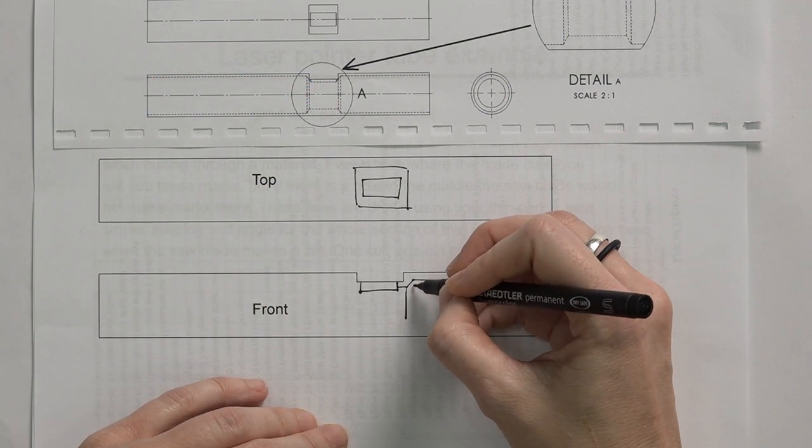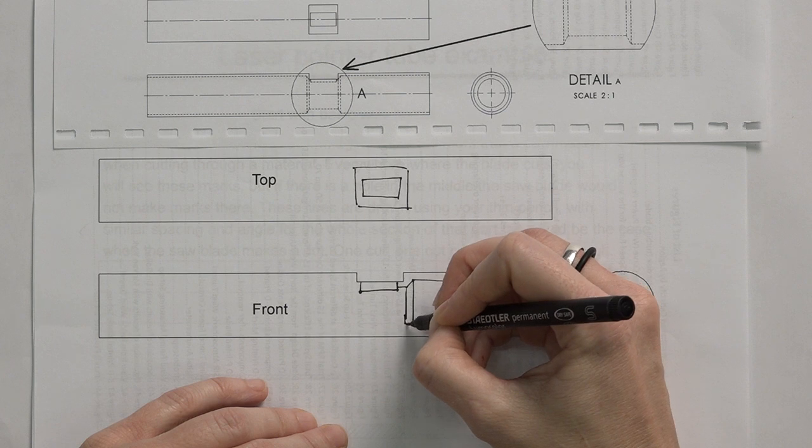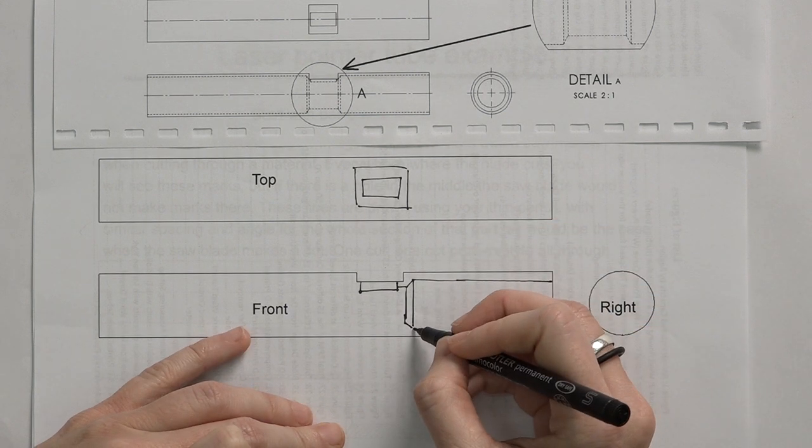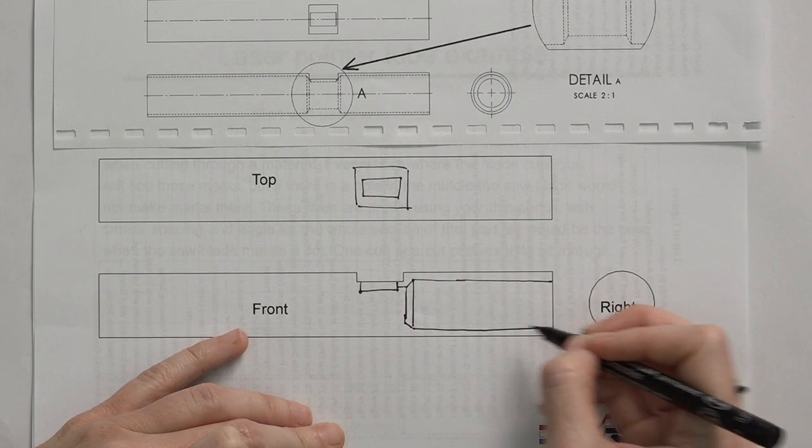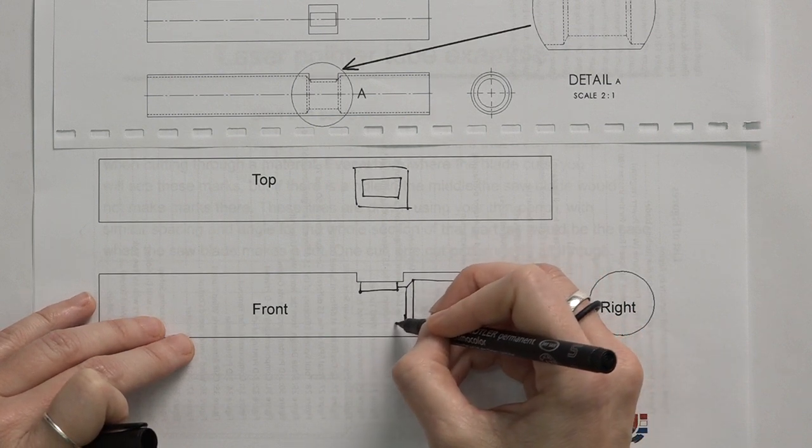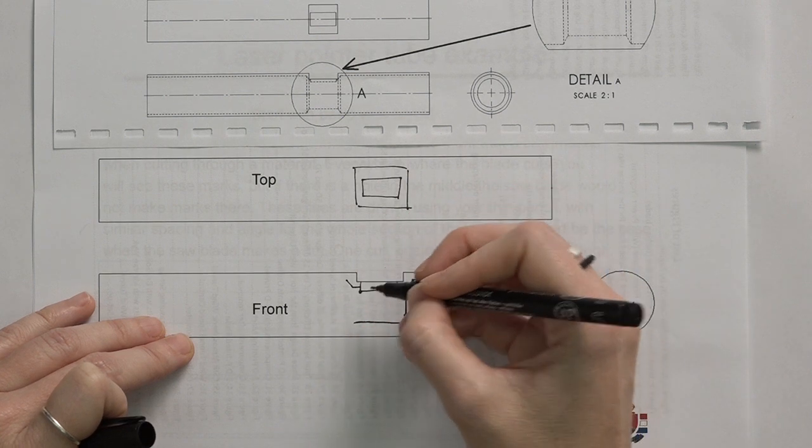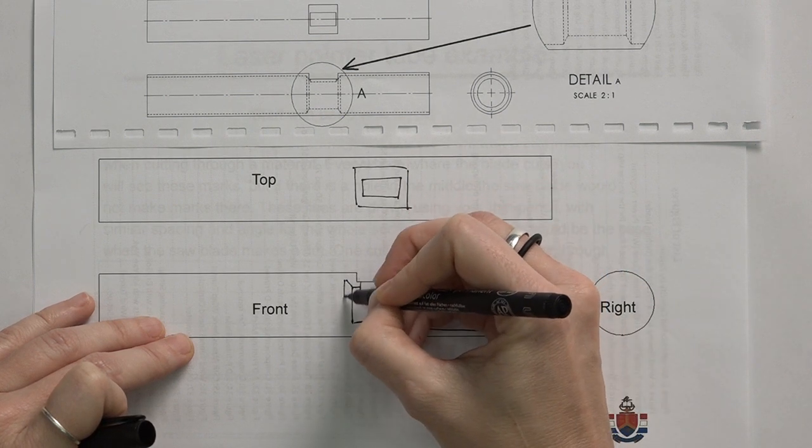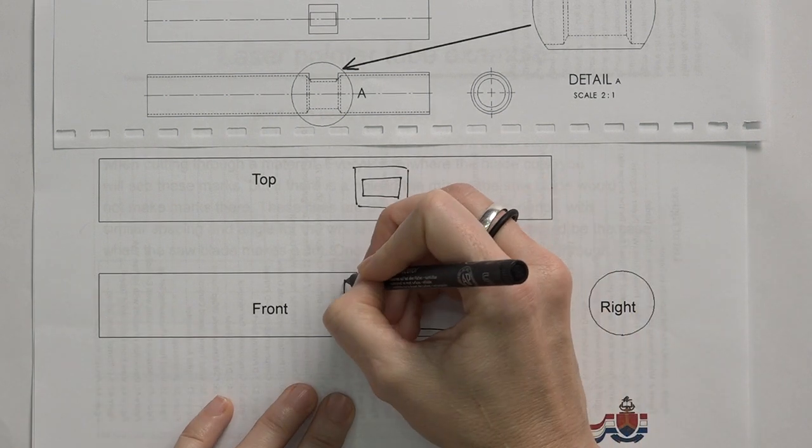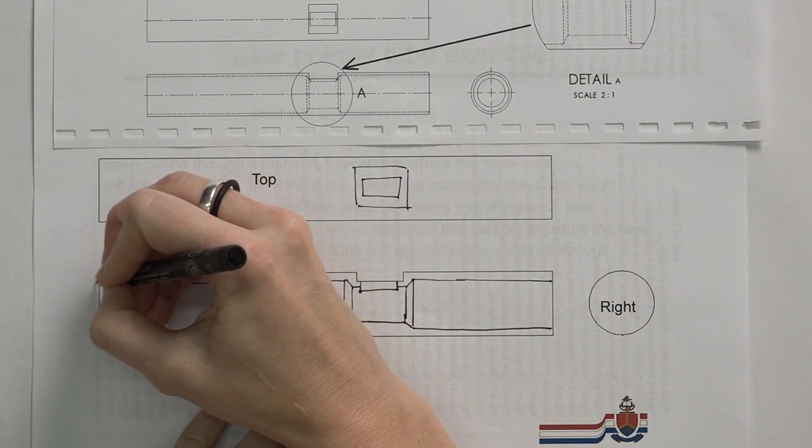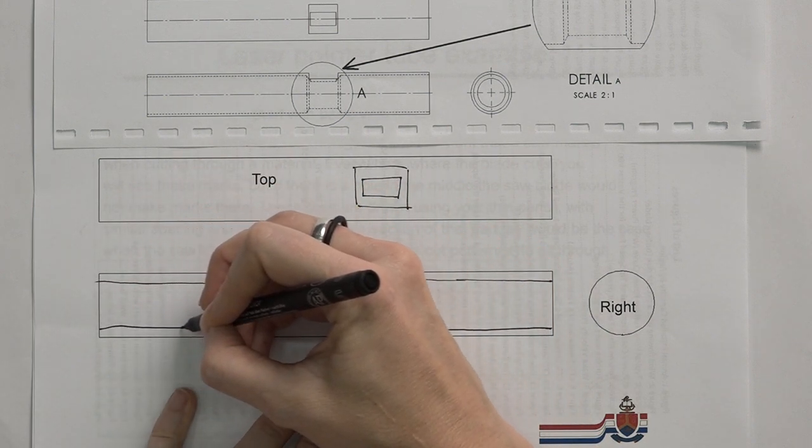I'm going to redraw all those lines as if I'm seeing them as solid lines because now they're not hidden anymore because I've actually cut that front part of the component away. So I'm redrawing all of this and all those previously hidden lines now become solid lines.